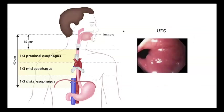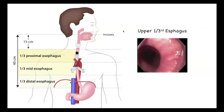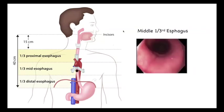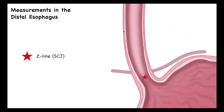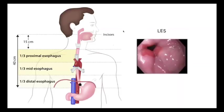Once you go down behind the piriform fossa, you reach the upper esophageal sphincter, which has a lot of thick skeletal muscle. As you go further down, you are behind the trachea — that is the upper one-third of the esophagus. Behind the heart is the middle one-third. Then as you come down, you go through the diaphragm and reach the lower esophageal sphincter, which is important for all endoscopies.